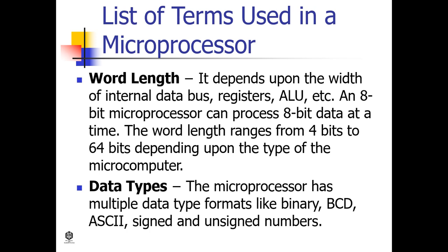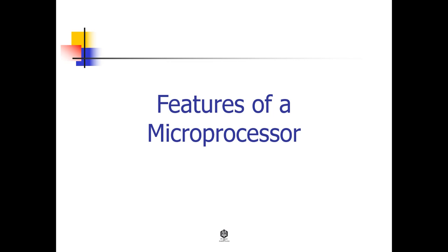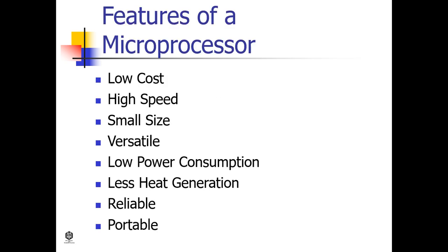Let's proceed to the features of a microprocessor. Here is a list of some of the most prominent features. Low cost: microprocessors are available at low cost due to integrated circuit technology, which reduces the cost of a computer system.